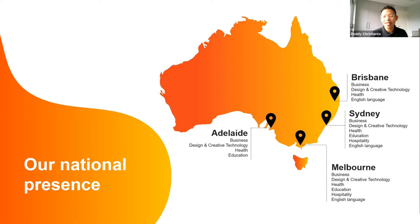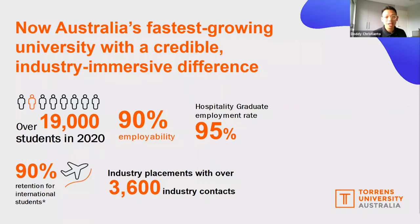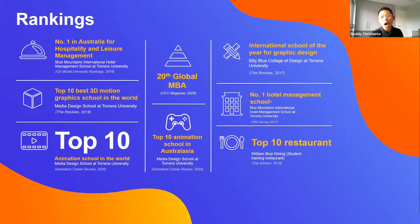Now for the fun facts about Torrens University Australia. As mentioned earlier, Torrens University Australia is Australia's fastest growing university with an incredible industry-immersive difference. Currently, we have more than 19,000 students studying here. We have a high employability rate of 90%, and for our hospitality graduates, the employment rate is 95%. We have a high retention rate for international students of 90%, and more than 3,600 industry contacts for industry placements. We are number one in Australia for hospitality and leisure management, top 10 best 3D motion graphics schools in the world, top 10 animation schools in the world, and number 20 global MBA based on CEO magazine.